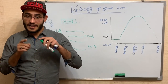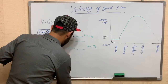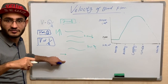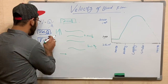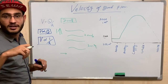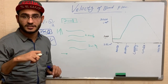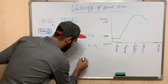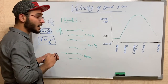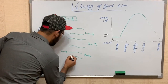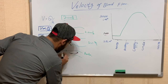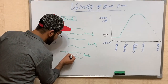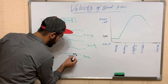Blood enters the aorta from the left ventricle with the highest pressure and the highest blood volume. Due to this high volume and pressure, velocity increases in the aorta, causing the flow to change from laminar flow to turbulent flow. This turbulent flow can damage the blood vessel walls.